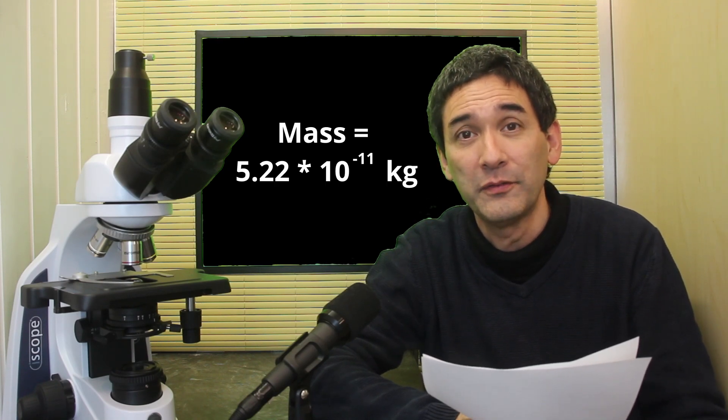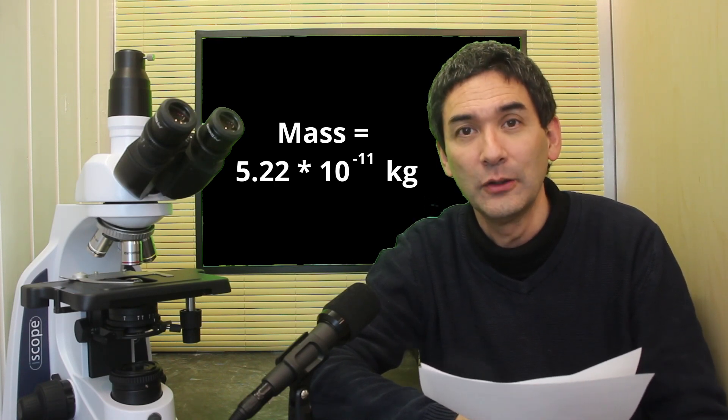This is incredibly small, of course. But this volume is now very useful because if I multiply the volume by the density, remember the 800 kilograms per cubic meter, then I'm getting the mass of the cell. That's really nice. And I determined this mass of the cell to be 5.22 times 10 to the power of negative 11 kilograms.